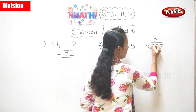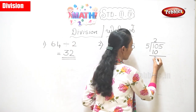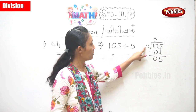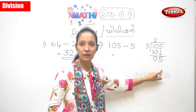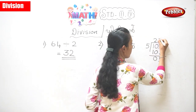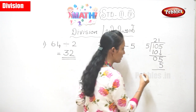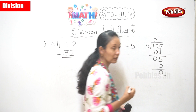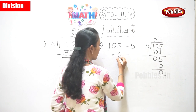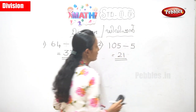Two fives are ten. Now ten minus ten — the answer is zero. You have to bring your 5 down. Now you have to divide 5 divided by 5. Five into one is five. So your answer there is 1. One five is five. Five minus five is zero. So 105 divided by 5 — your answer is 21.